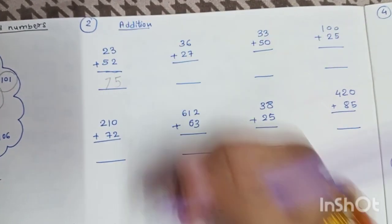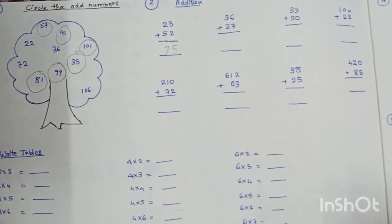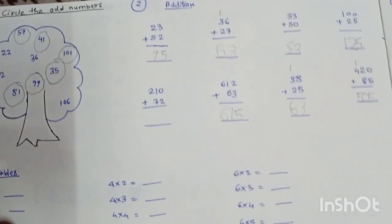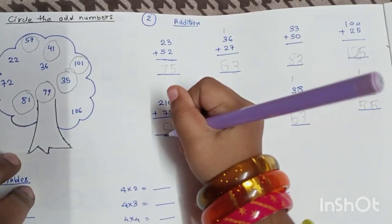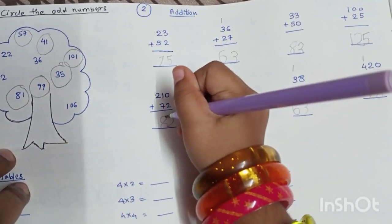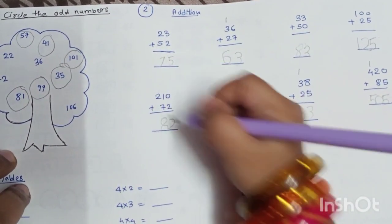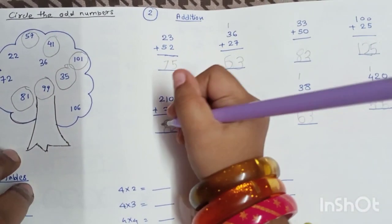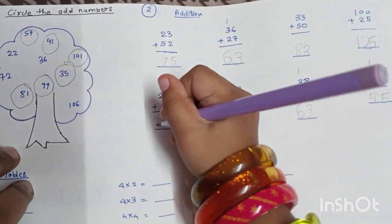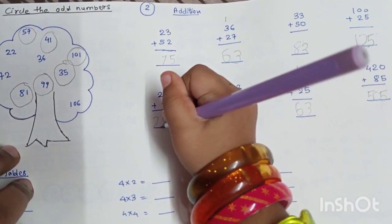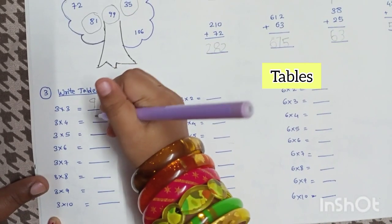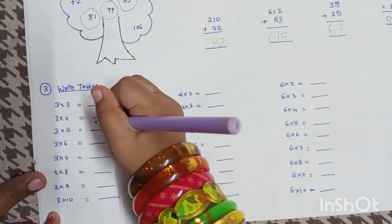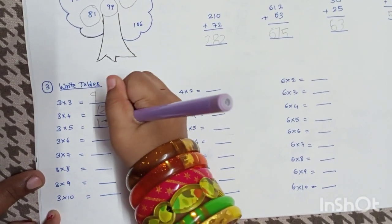...is 7. So what is the answer? 75. 2 plus 0, 7 plus 1 — don't tell me the answer. 7 plus 1 is 8, and 2 plus 2 equals... So the answer is 282.